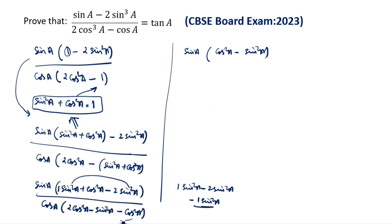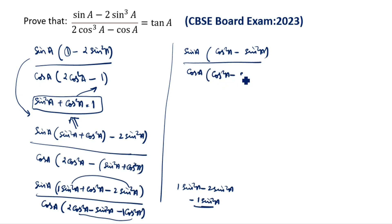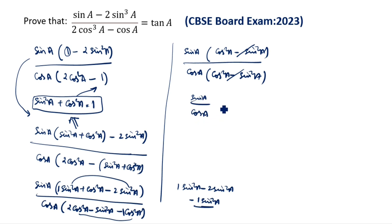Next is sin A open the bracket (cos square A minus sin square A). Down: cos square A to cos square A, so cos A open the bracket (cos square A minus sin square A). These cancel, leaving sin A by cos A. So sin A by cos A is equal to tan A.